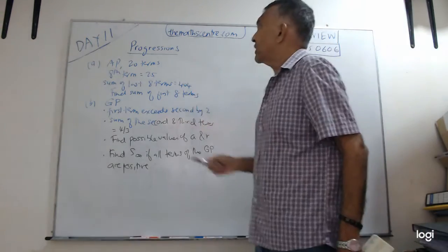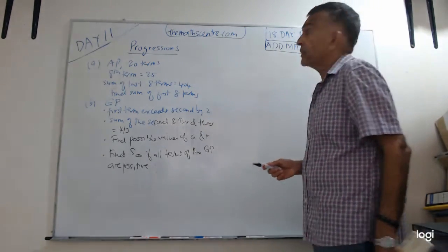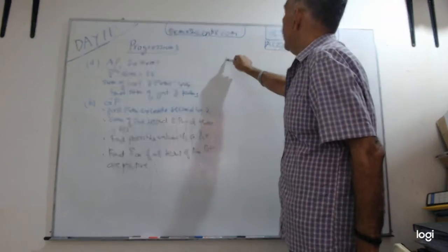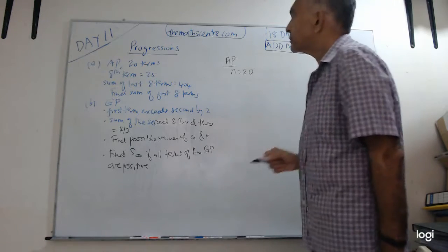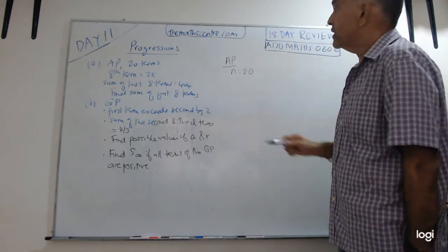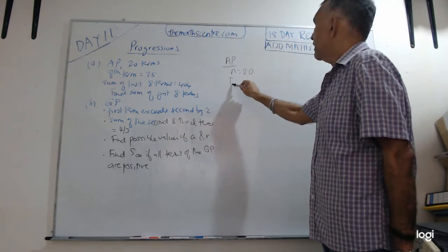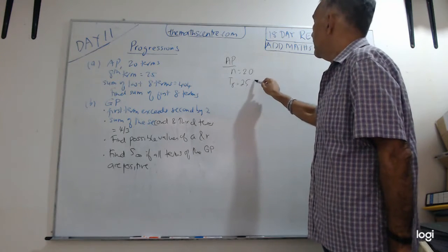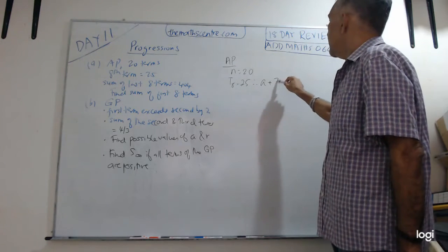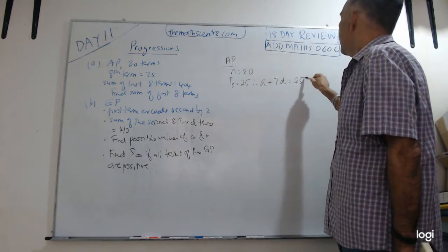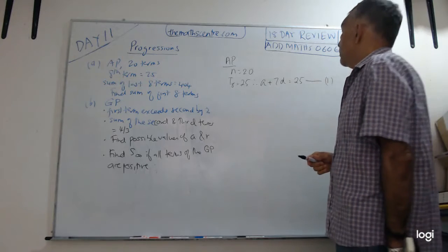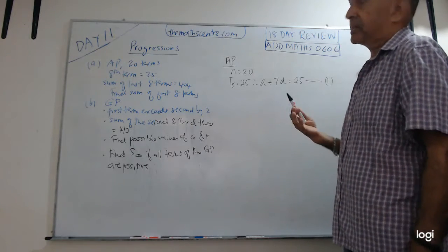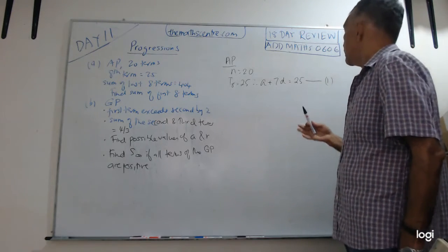In part A of the question, we have an arithmetic progression, 20 terms, so n equals 20. The eighth term is 25. Therefore, a plus 7d equals 25. So I have equation number 1. We are using the formula Tn equals a plus n minus 1 d. So a plus 7d equals 25.